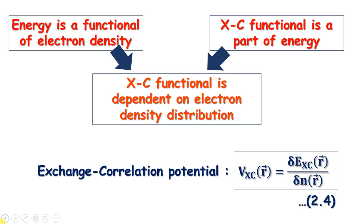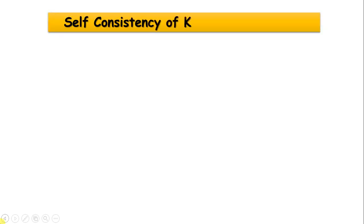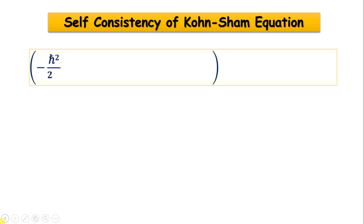Before going further into exchange-correlation, we will take a look at the self-consistency of the Kohn-Sham equation. To present a seminar on DFT, this is something you must have the knowledge of. In a sophisticated way, the Kohn-Sham equation is written as: minus ℏ² ∇² / 2m plus V plus V_H plus V_xc of φᵢ equals εᵢ φᵢ, which is our equation number 2.5, where V_H is the electron-electron Coulomb interaction energy.